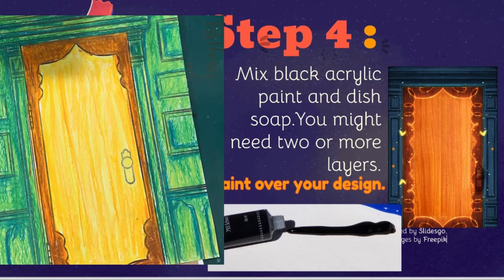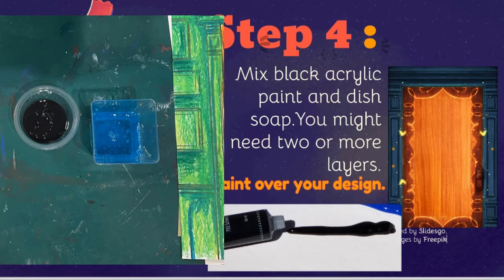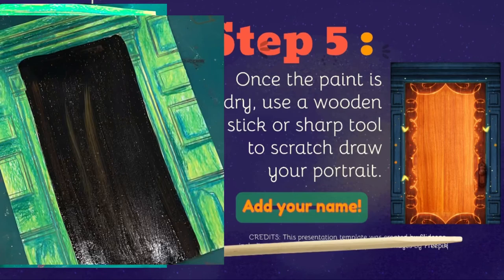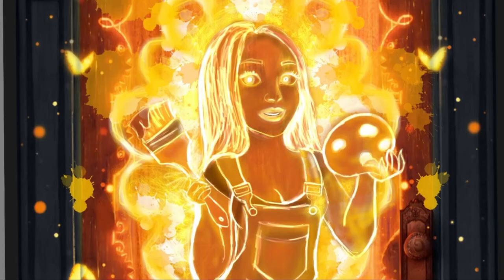Once I did that, I covered the oil pastels with two coats of black acrylic paint mixed with Dawn dish soap. This allowed me to have layers to scratch through. It could be that my scratch art skills are just not the best, or that my digital drawing was just so much better. But I really enjoyed and loved the outcome of my digital drawing, and it was fun trying the scratch art technique on paper.